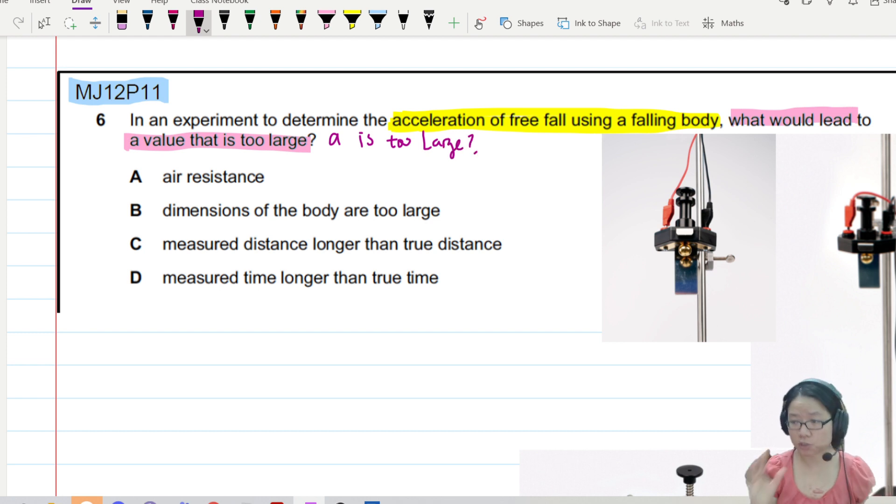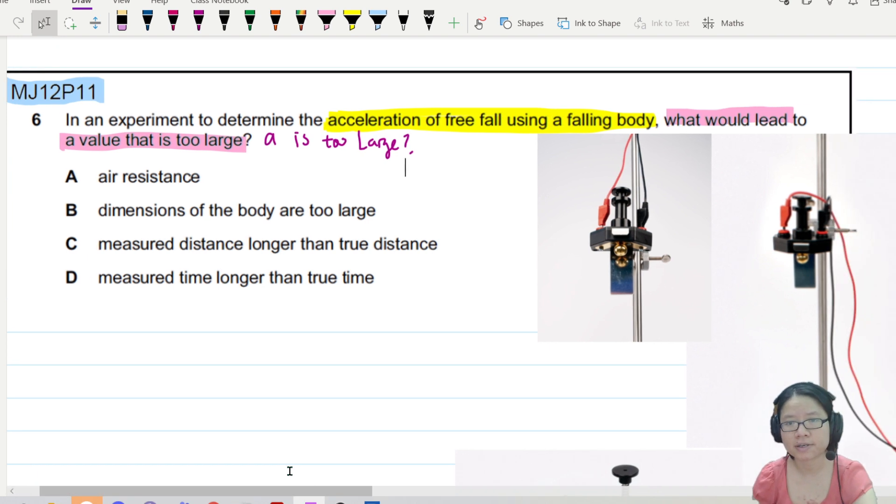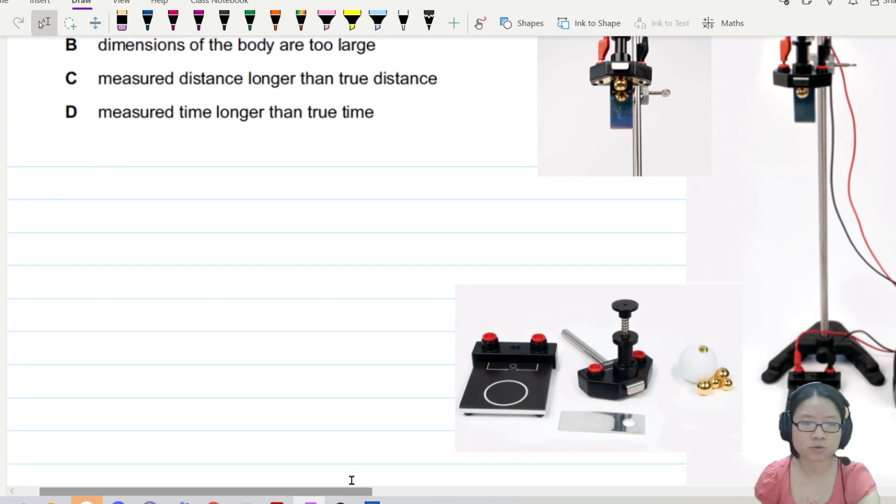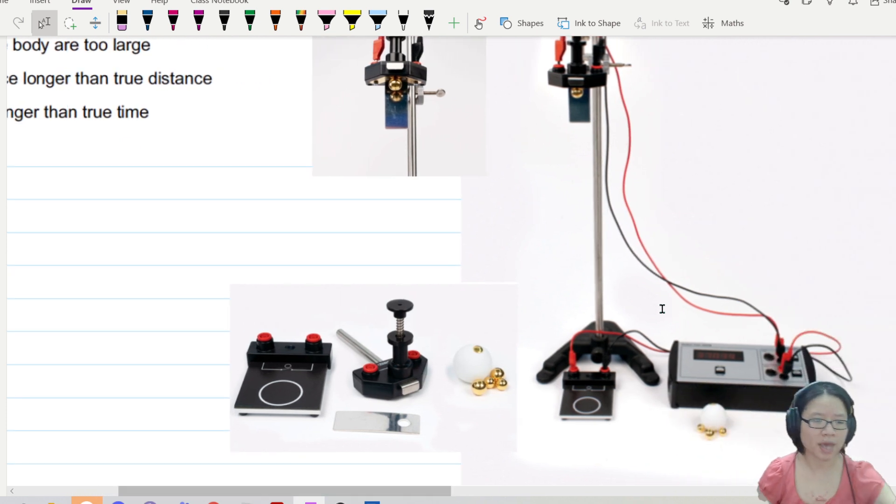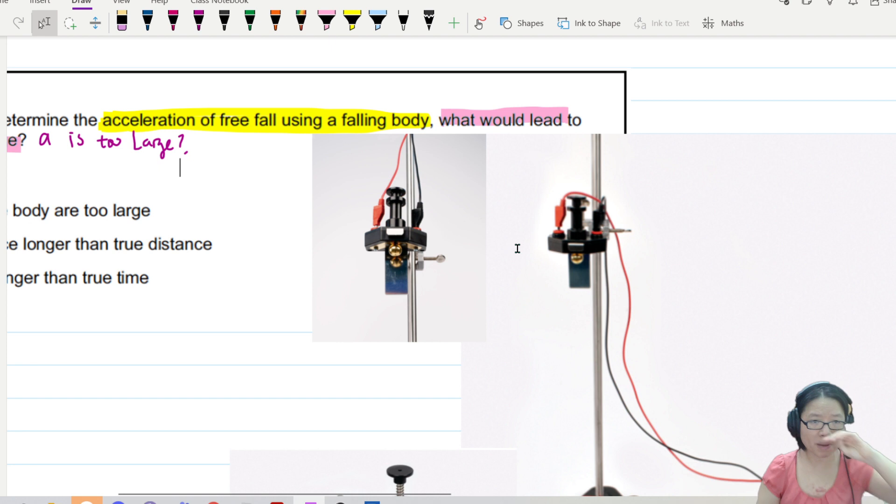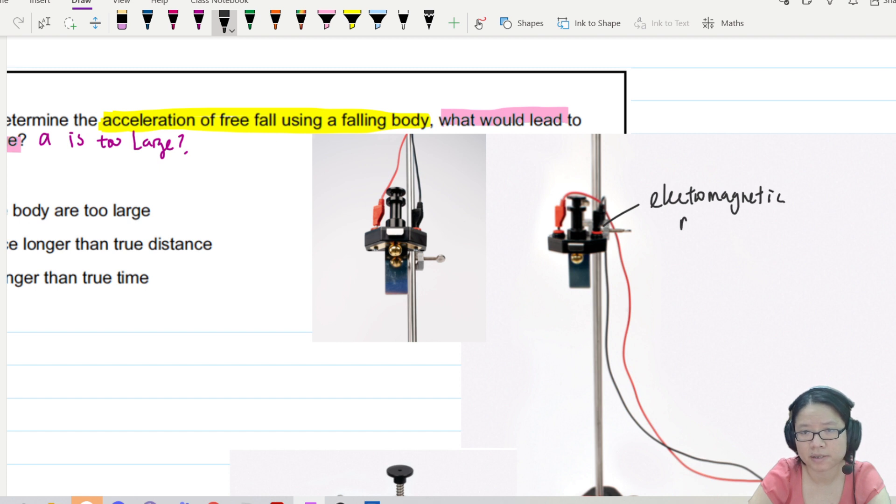So if you have trouble visualizing the free fall experiment, I have found some pictures from the internet and a free fall experiment generally would look something like this. So what we have here, let me show you. On the top part, we have this thing called an electromagnetic release. So we call this an electromagnetic release because there's a magnet here. Magnetic release.